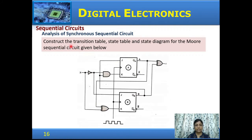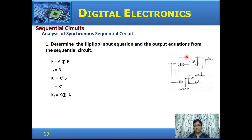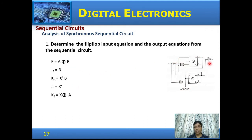From a given circuit, first obtain the logic expressions, then derive the excitation table, state table, and state diagram. The example: construct a transition table, state table, and state diagram for a given Moore circuit. From the logic diagram, extract the input equations for each flip-flop. The output F = A XOR B (where A = QA and B = QB). JA = B, meaning JA = QB.